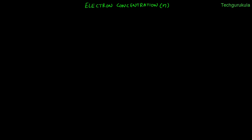In this video we are going to derive and find the expression for electron concentration in conduction band. I am taking an energy band diagram where this is conduction band and this is valence band, where the bottom edge of conduction band is called EC and top edge of valence band is called EV, and the difference between these two is the forbidden energy gap EG.